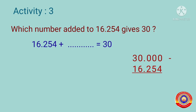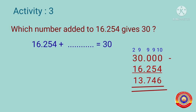Now subtract 16.254 from 30.000. We can't subtract 4 from 0, so borrow — the 3 in the tenths place becomes 2, and the zeros to the right become 9 and 9. Subtract: 10 minus 4 is 6, 9 minus 5 is 4, 9 minus 2 is 7, 9 minus 6 is 3, and 2 minus 1 is 1. Therefore, 30 minus 16.254 is equal to 13.746. The number added to 16.254 to get 30 is 13.746. Is it clear for you?